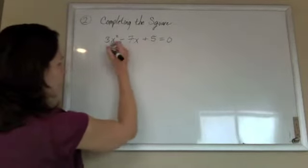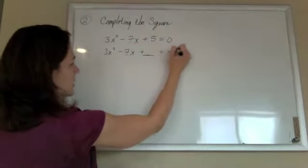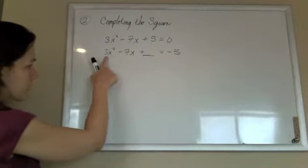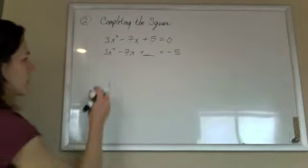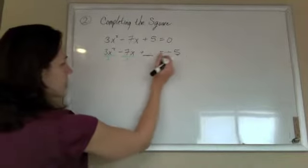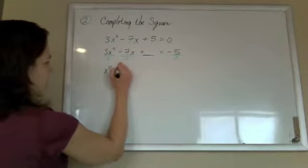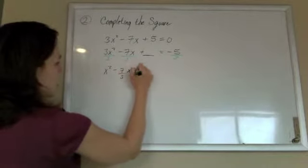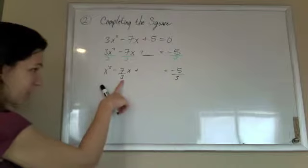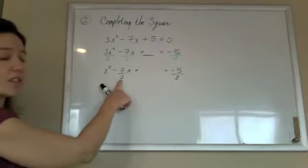So we're going to kick the 5 over to the other side. Leave something in its place. But this one's different than the last one because we have that silly 3 there. We don't like things in front of our x squared. So I want to divide every single piece by 3. So now I'm looking at x squared minus 7 thirds x, and I'm still going to add something.